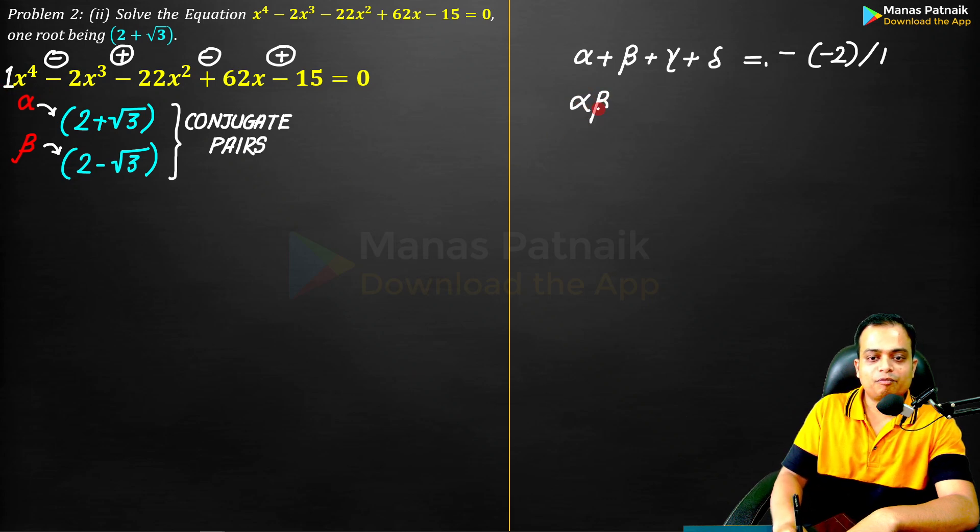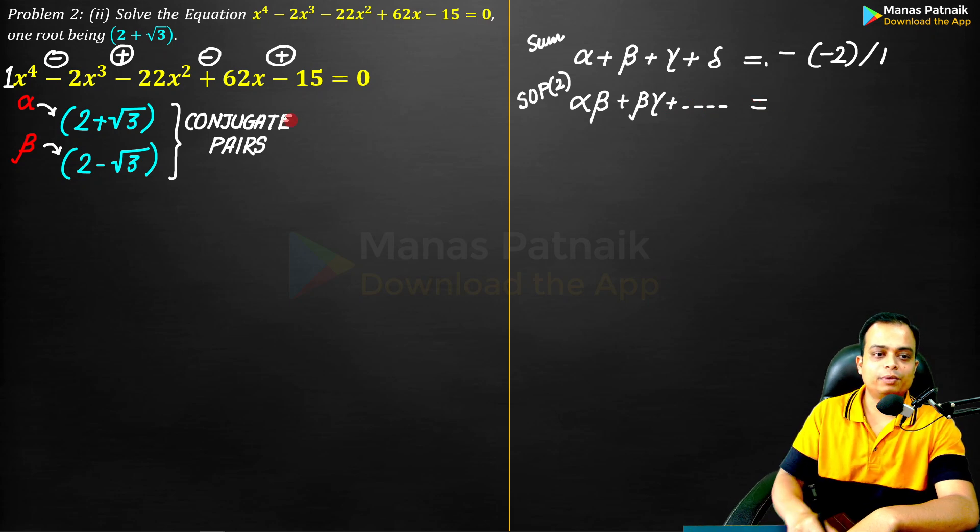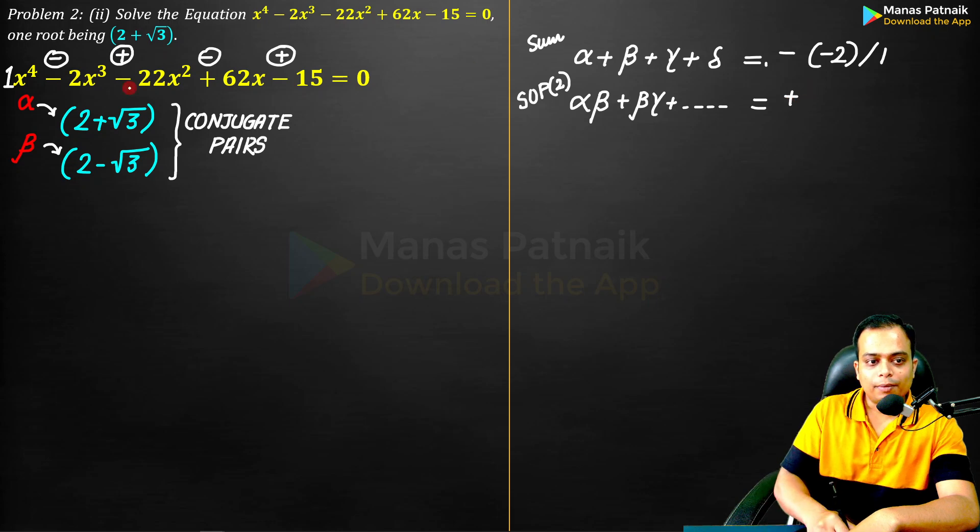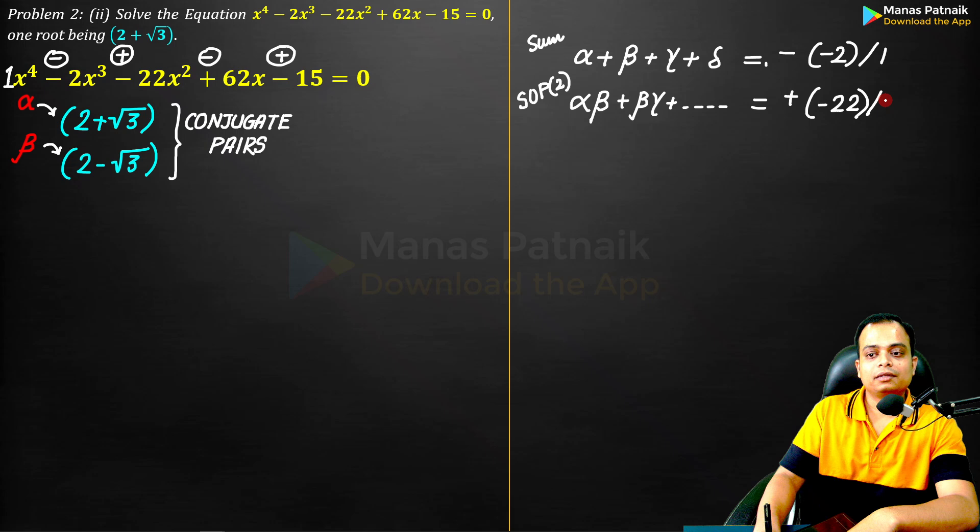The coefficient of x⁴ is 1 by the way. Secondly, if you apply the sum of product, this is sum. What I'm applying right now is the sum of product taking two at a time. αβ + βγ followed by γδ and δα. All of this is going to be equal to +(-22)/1. This is how you need to apply. Please observe this very carefully.